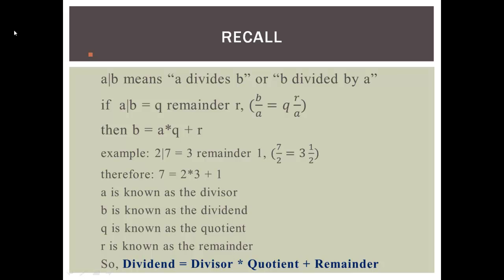For example, 7 divided by 2 gives 3 remainder 1. As a fraction, the left-hand side is an improper fraction and the right-hand side is a mixed number, so 7 equals 2 times 3 plus 1. Here, a is the divisor, B is the dividend, Q is the quotient, and R is the remainder. In this example, 7 is the dividend, 2 is the divisor, 3 is the quotient, and 1 is the remainder.